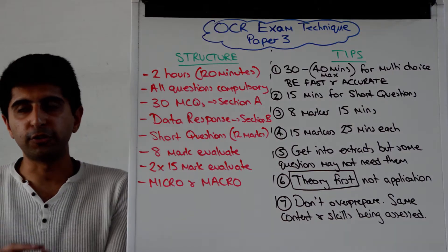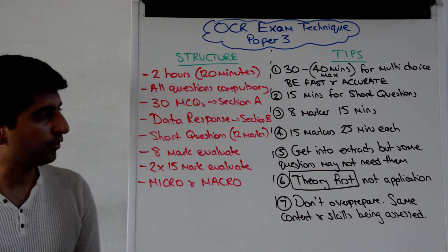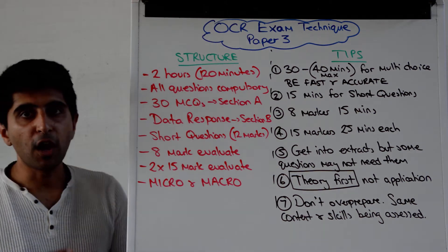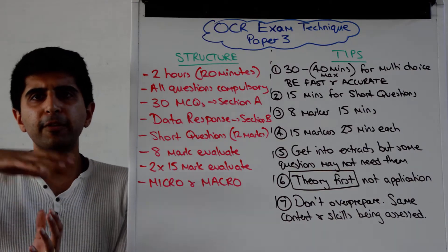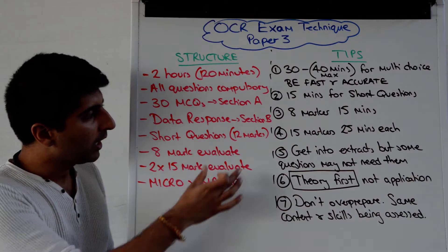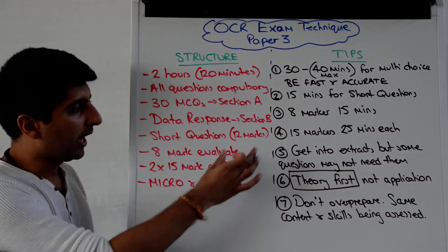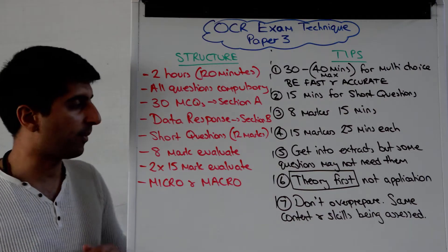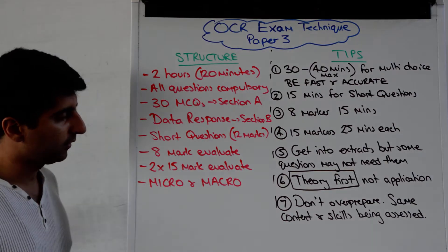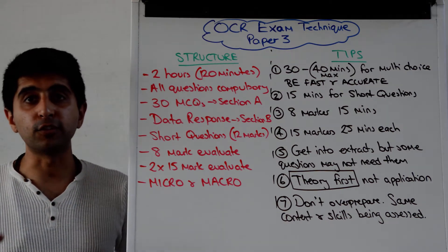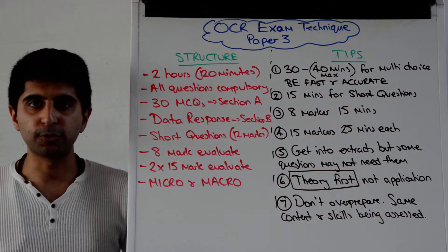Section B then goes to data response. You're going to have a variety of extracts with charts, text, etc., and questions are going to be themed around those extracts. Section B will comprise a variety of short questions — those can be scattered around Section B, but they are going to be worth 12 marks in total. You're also going to have one 8-mark evaluate question within Section B, two 15-mark evaluate questions in Section B, and it's all going to be micro and macro based.